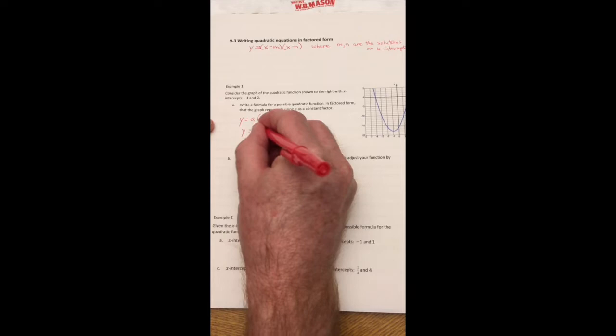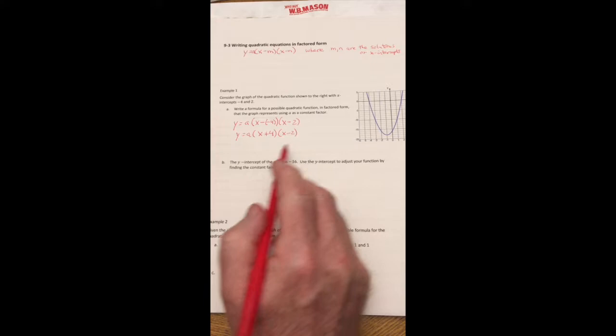Now, it helps to rewrite that because the two minuses does not look good, so I'm going to make that X plus 4 and X minus 2. So that's a possible function for this graph.